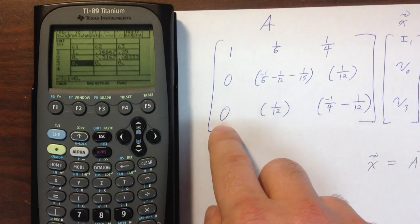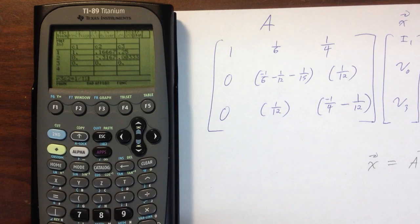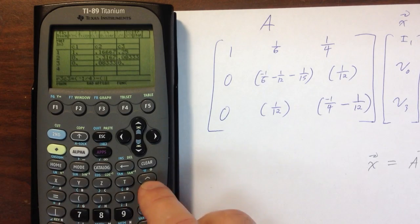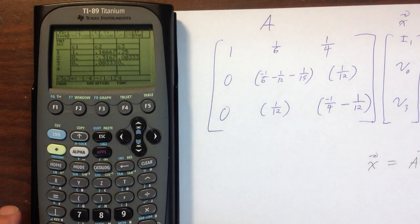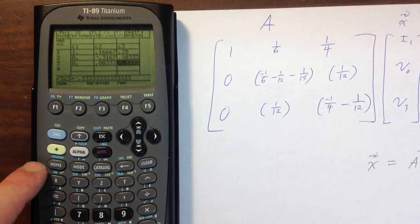The next one is 1 over 12. Then I've got 0, I've got 1 over 12. And then I've got minus 1 over 4, minus 1 over 12. Minus 1 over 4. So now I've got everything into my A matrix. Everything is in. The A matrix is saved.